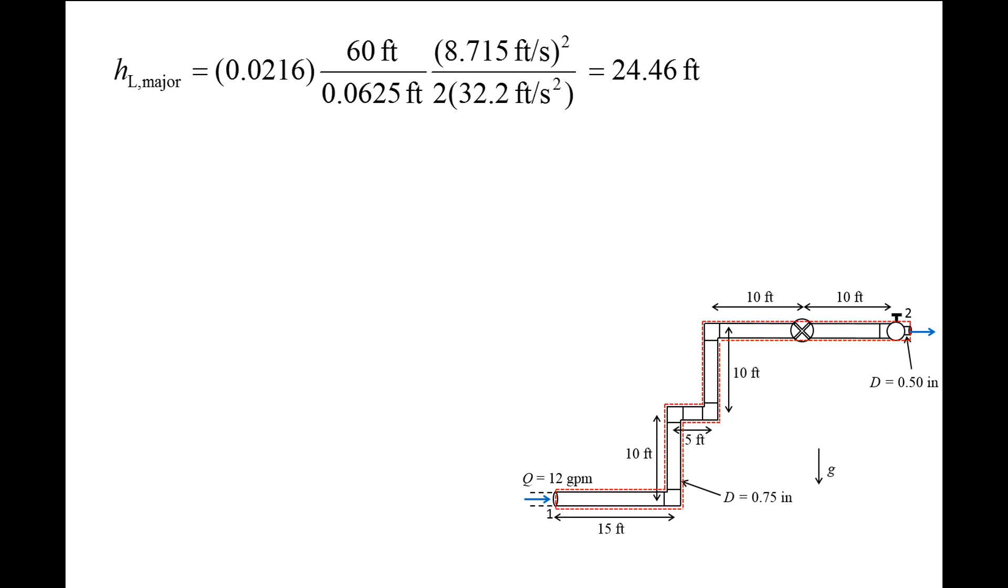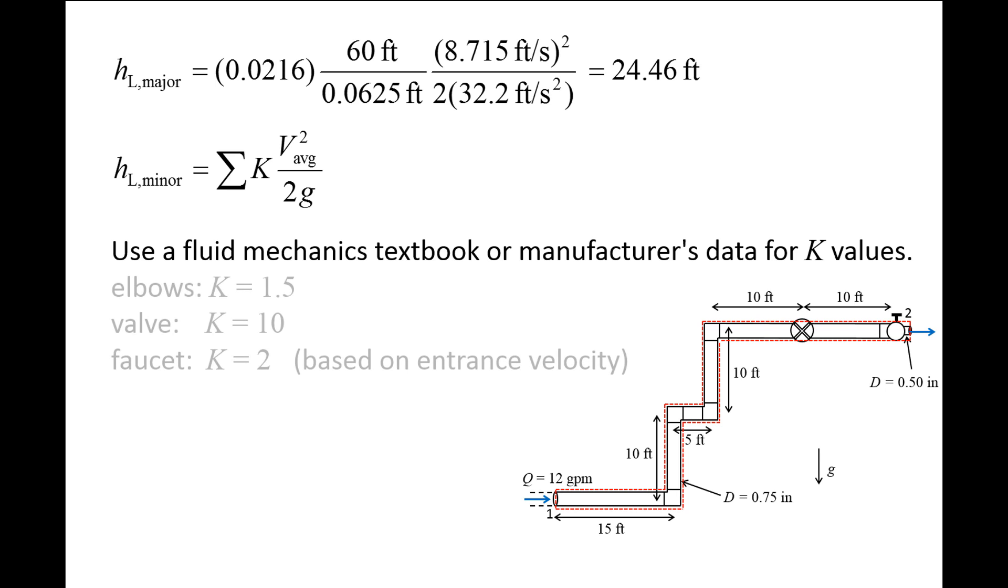Next, we turn our attention to finding the minor head loss. The equation for the total minor head loss is the sum of the minor head loss for each component, which is the loss coefficient K times the average flow speed squared over 2g. The values of the minor loss coefficients are dependent upon the particular design of the component. We can obtain estimates of loss coefficients from fluid mechanics textbooks or from the manufacturer of the components if they provide them.